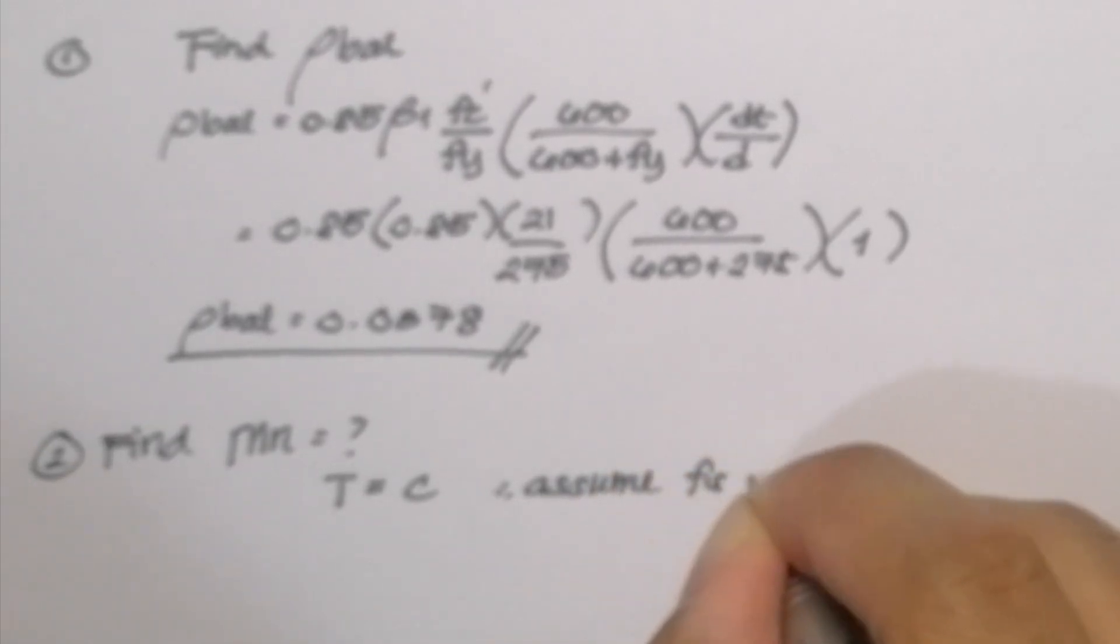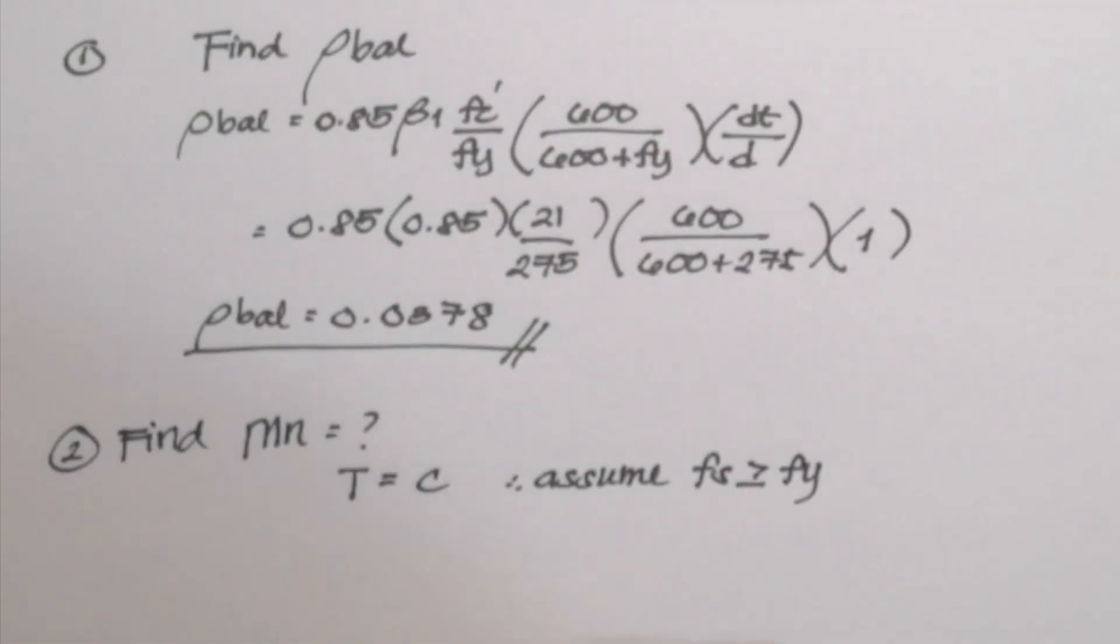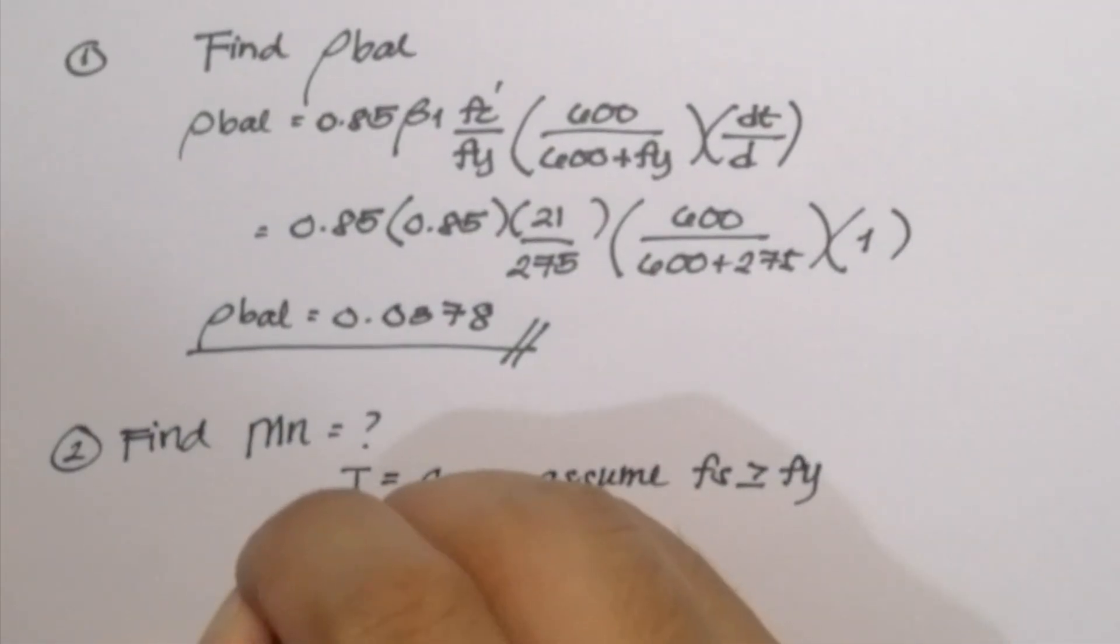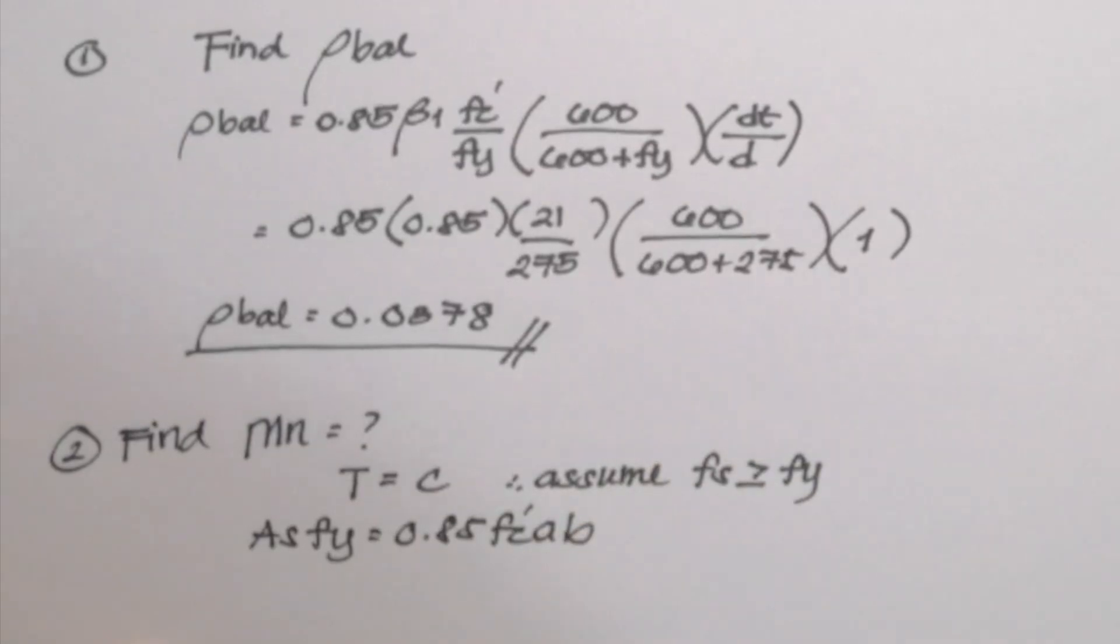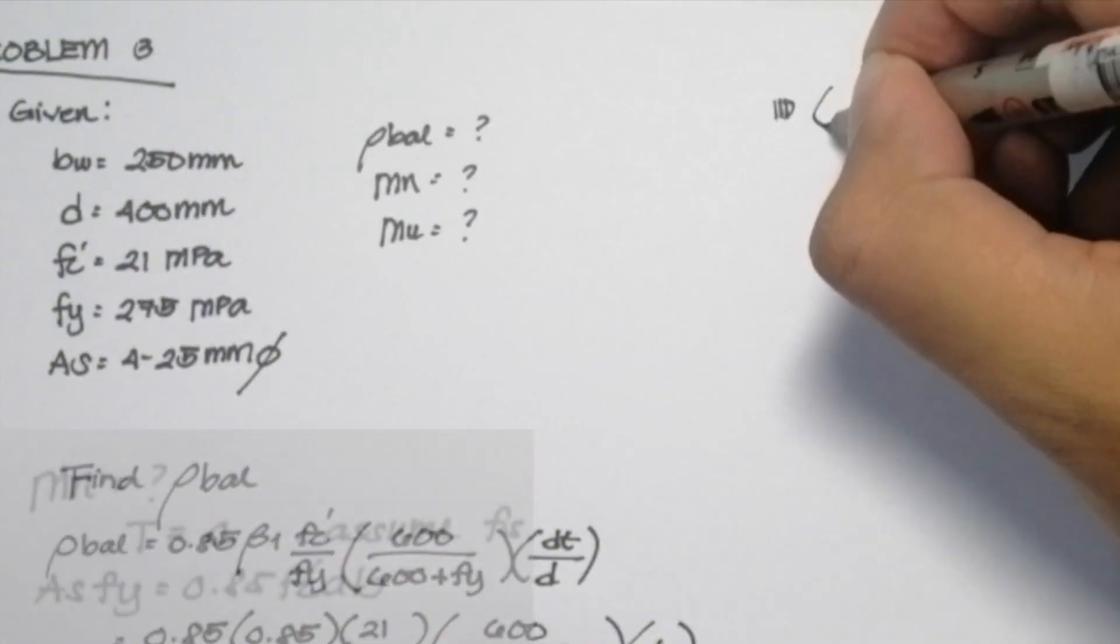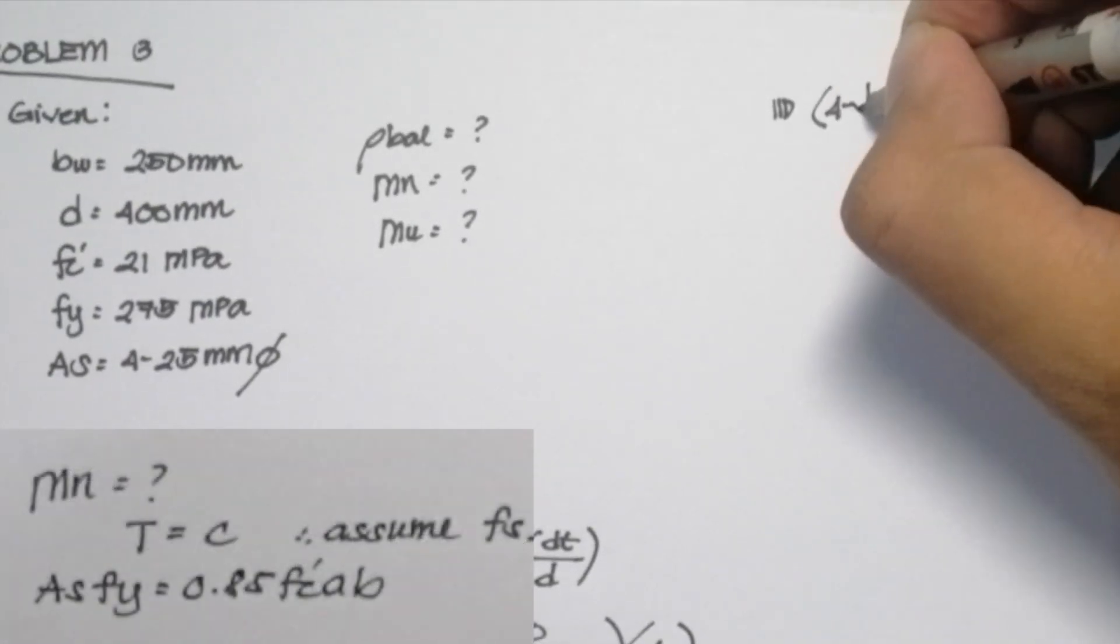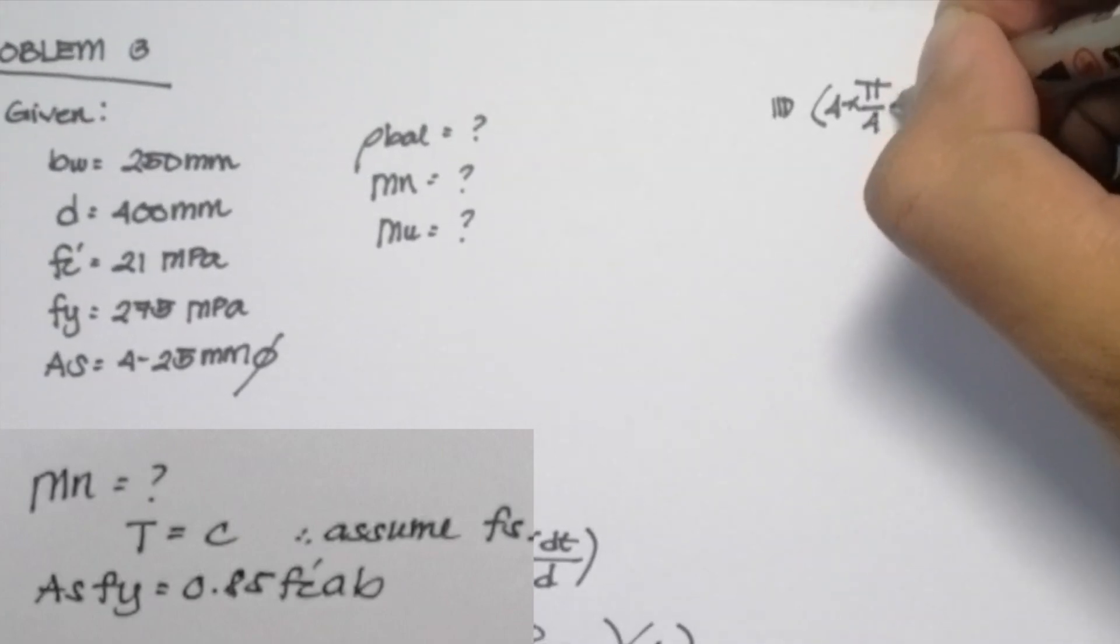So T is equal to As fy is equal to C, 0.85 fc' ab for the area of the compression block. So let's input our values. As or the area of steel is composed of 4-25mm diameter reinforcements.